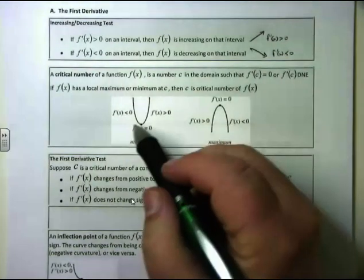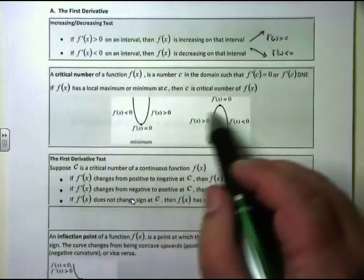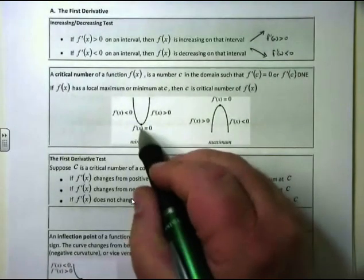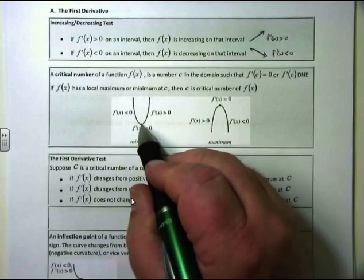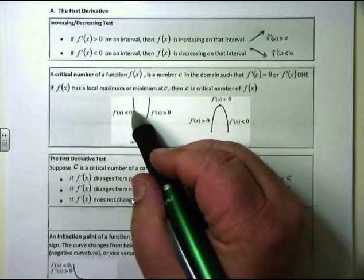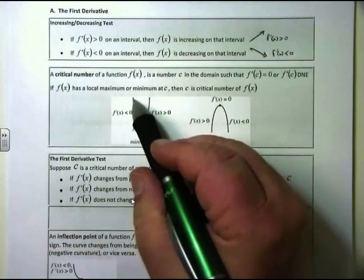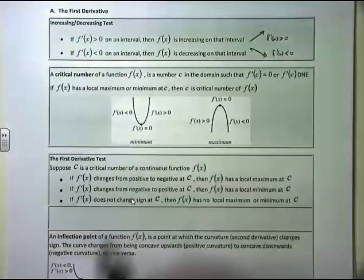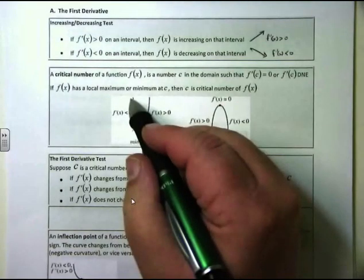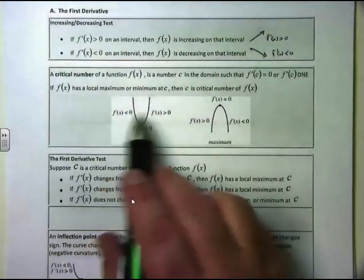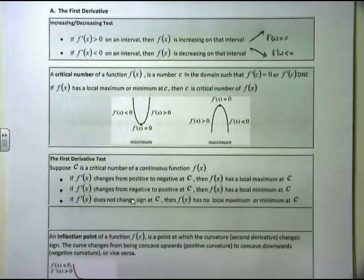You'll notice about these critical numbers and how they relate to max and min. If you look to the left of a minimum, the graph is going down, which means the slope has to be negative. Then you hit your point, and now the slope is going up or positive. So to go down then up, you change from a negative slope to a positive slope — that makes a minimum critical number.